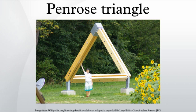The Penrose Triangle, also known as the Penrose Tribar, is an impossible object. It was first created by the Swedish artist Oscar Reutersvård in 1934. The psychologist Lionel Penrose and his mathematician son Roger Penrose independently devised and popularised it in the 1950s, describing it as impossibility in its purest form.